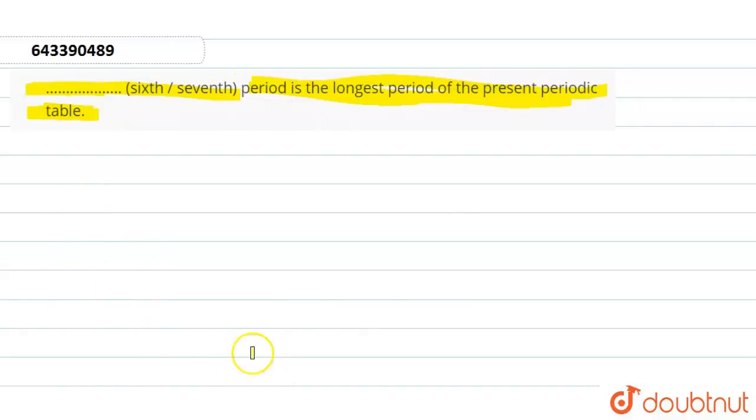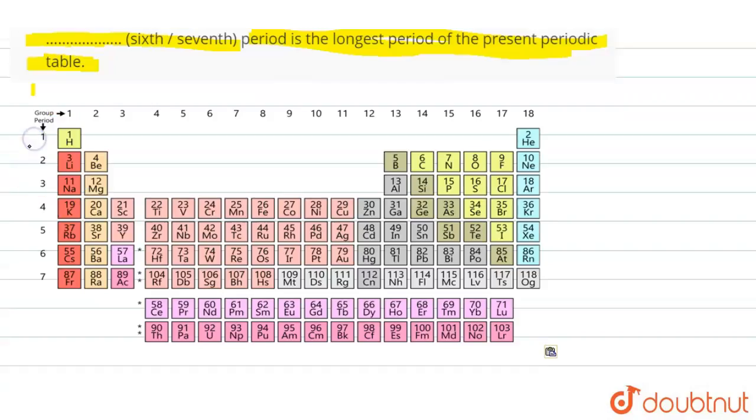So in a periodic table, here this is our sixth period and this is our seventh period. So in sixth period the total number of elements are 32 and that is considered as the longest period.